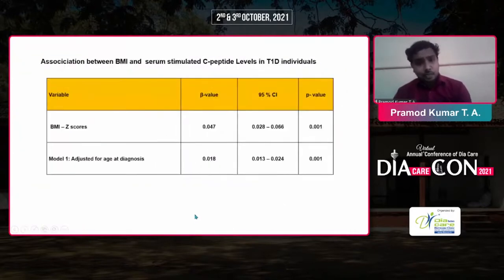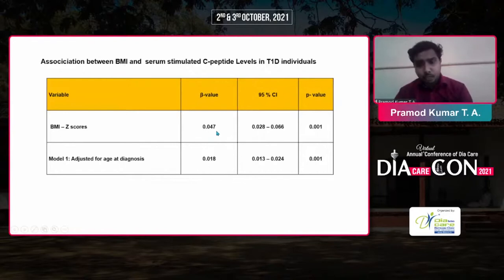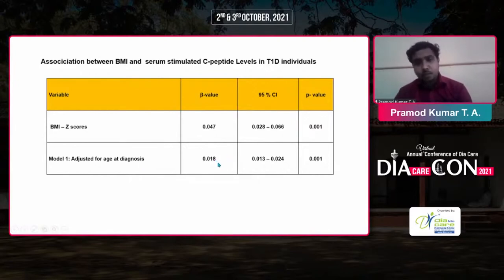We also performed regression analysis to determine whether BMAZ scores had an impact, and found a beta value of 0.04 — reduced but still statistically significant. Age at diagnosis had no impact on stimulated C-peptide levels, and the beta value was reduced to only 0.08 but remained statistically significant.